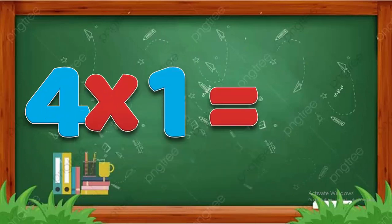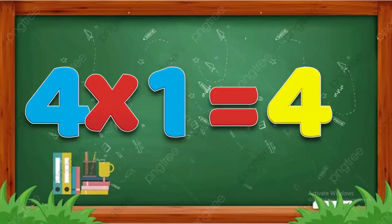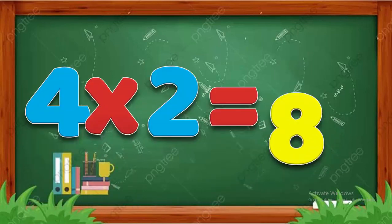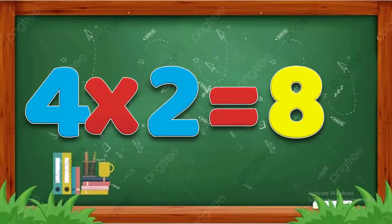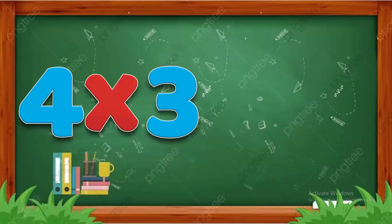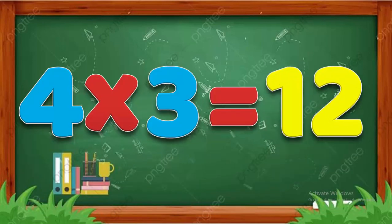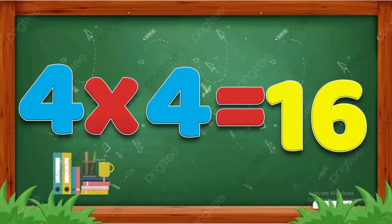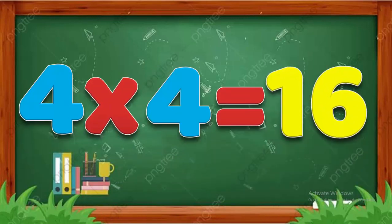Four ones are four. Four twos are eight. Four threes are twelve. Four fours are sixteen.